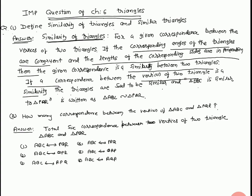If a correspondence between the vertices of two triangles is a similarity, the triangles are said to be similar. Triangle ABC is similar to triangle PQR, written as ABC ~ PQR. This is the notation of similar triangles. Now question number 2: How many correspondences are possible between vertices of triangle ABC and triangle PQR?